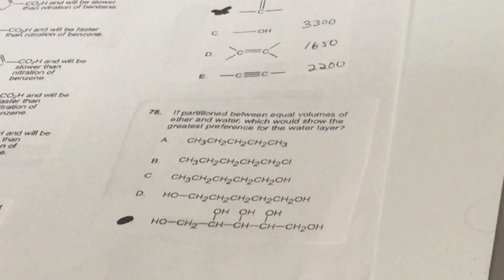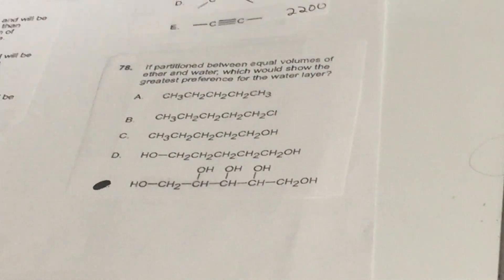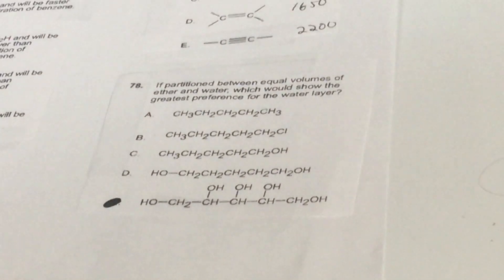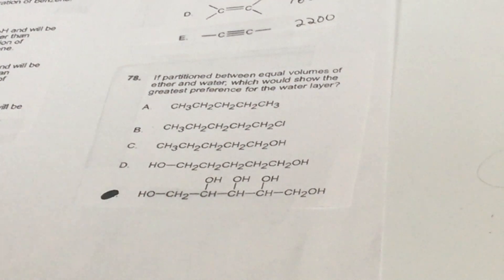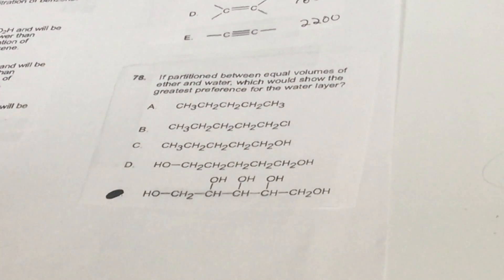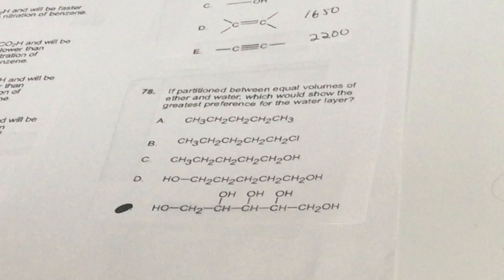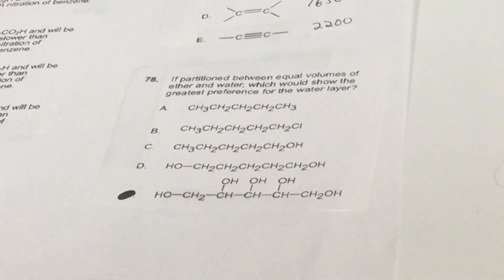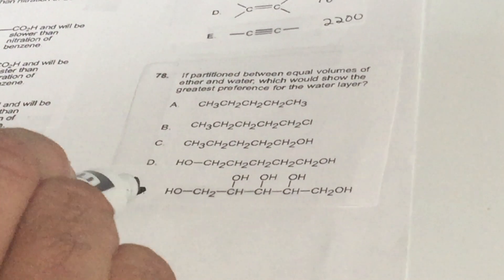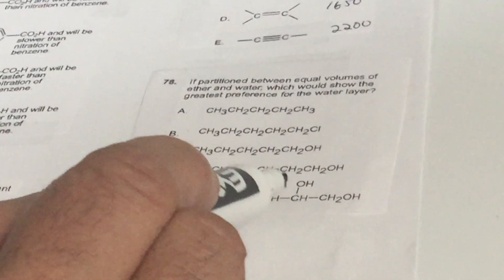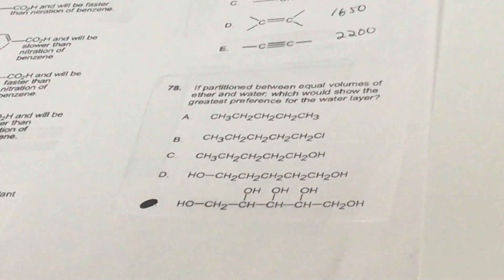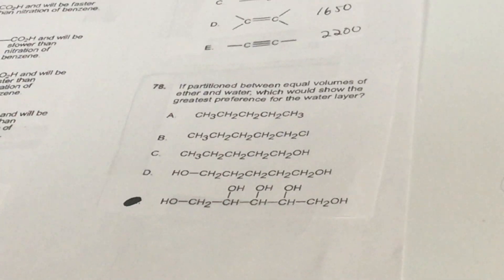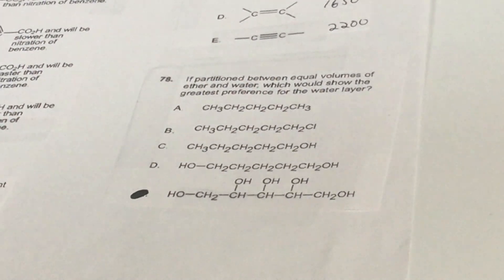78, if partition between equal volumes of ether and water, which will show the greatest preference for water. The minute you hear water, I want you to think O's or N's. If you see something with more O's and more N's means more water soluble. And as you can see, choice E has the most amount of O's. My God, look at all those O's. Those O's means there's extensive amount of hydrogen bonding. That was a joke.